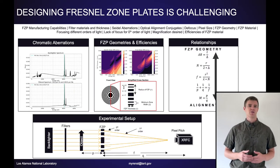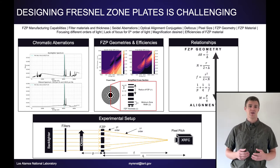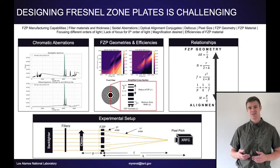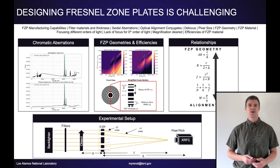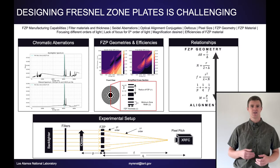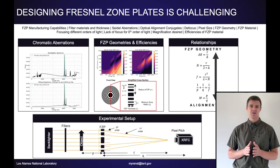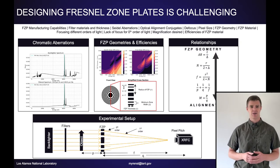While FZPs are promising, designing a FZP for a given system gets complex rather quickly. First, FZPs are highly sensitive to chromatic aberrations. Secondly, the design space in the geometry of the FZP has a lot of moving parts. For example, the thickness governs the efficiency of the lens for a given energy, and the minimum zone width determines the theoretical resolution. But as you decrease the zone width, you run into manufacturing constraints like lithography limits and impossible aspect ratios.